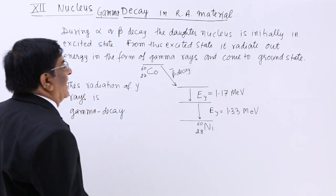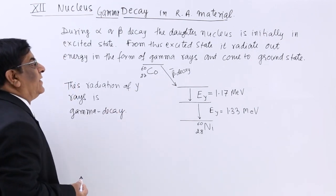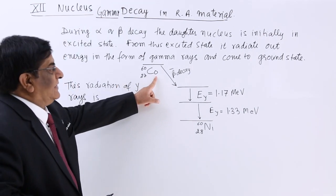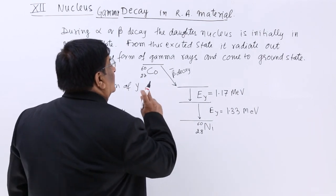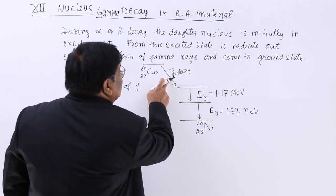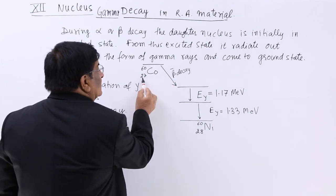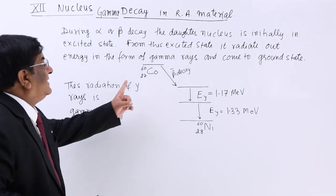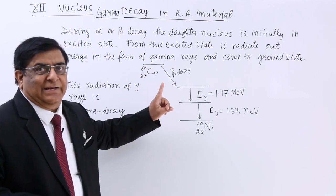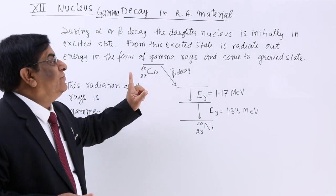Now we have one example, cobalt. Cobalt is a radioactive material and with a beta decay, beta minus. If there is a minus decay then this 27 will become 28 and when this 27 become 28 the name will change to nickel.